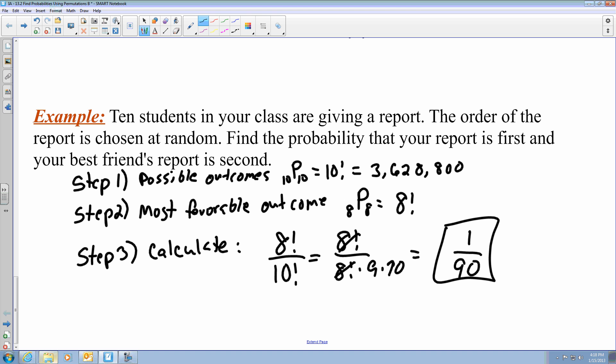So you have a 1 in 90th chance, that's the probability. You have a 1 in 90th chance of you getting selected first and your best friend being selected second.